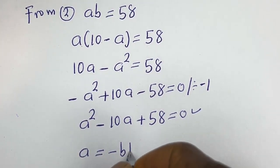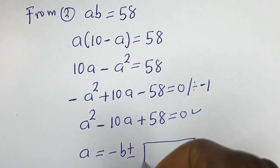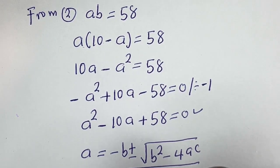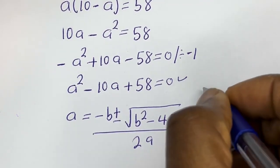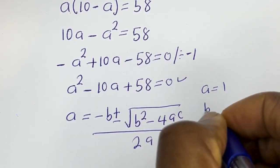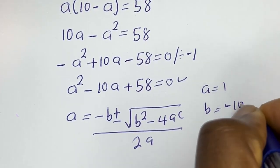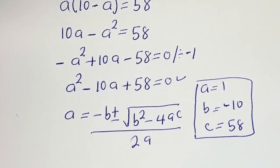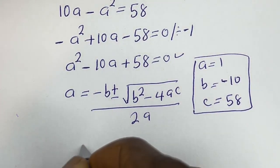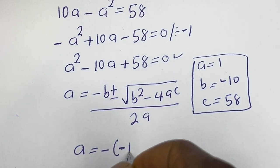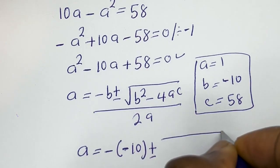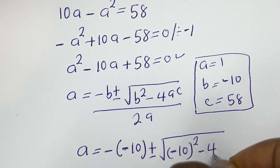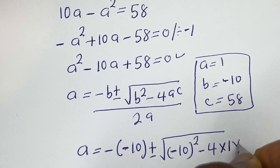The quadratic formula is: a equals minus b plus or minus square root of b squared minus 4ac, all over 2a. From our quadratic equation, the coefficient a is equal to 1, b is equal to minus 10, and c is equal to 58.